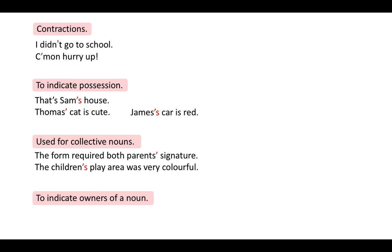A colon can be used to introduce an explanation, to separate independent clauses, to introduce an example, to introduce a list in a sentence, and before direct speech. An example of a colon used to introduce an explanation: 'She had one problem: there was no way she could finish her homework in time.' The general idea is given, followed by the colon, and then the specific explanation. The colon in this sentence can also be used to show emphasis.